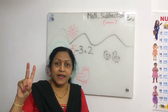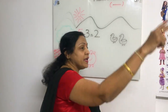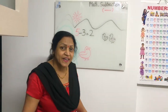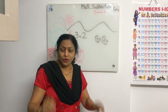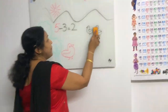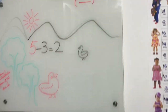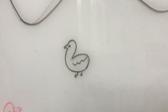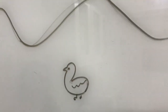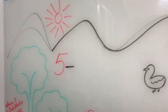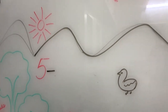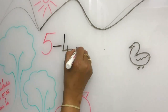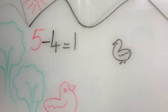Now, two little ducks went out one day, over the hills and far away. Mother duck said quack, quack, quack, quack. Only one little duck came back. So how many little ducks came back? Only one came back. When we subtract four from five, the answer is one.